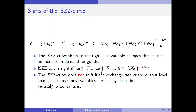Can you see government spending here? Yes, there is government spending. So in case that government spending increases, the right-hand side of this equation increases. Y also has to increase so that the equal sign holds, and the ISZZ curve shifts to the right. This is also mentioned in the second bullet: the ISZZ curve shifts to the right if government spending increases.